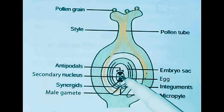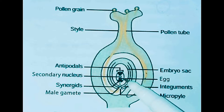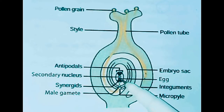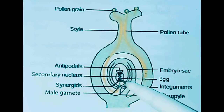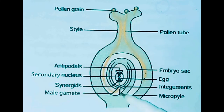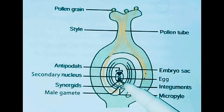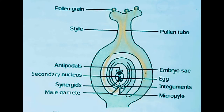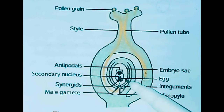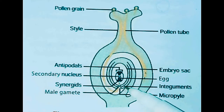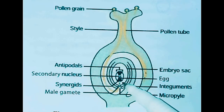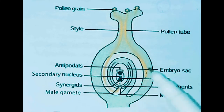Since two types of fusion take place — syngamy and triple fusion — in the embryo sac, the process is called double fertilization. One male gamete fuses with the egg (syngamy) to form the diploid zygote; the other sperm fuses with the secondary nucleus (triple fusion) to form the endosperm, which is triploid (3N). After triple fusion, the primary endosperm nucleus develops into the endosperm, which provides food for the developing embryo in the seed. The synergids and antipodal cells degenerate afterwards.